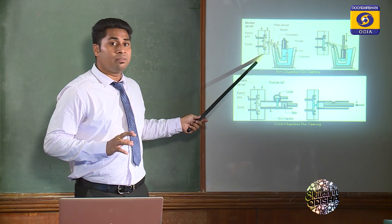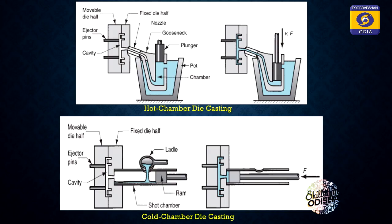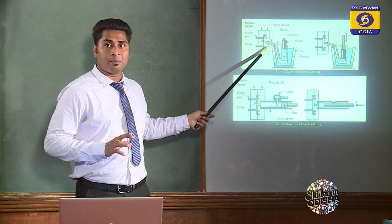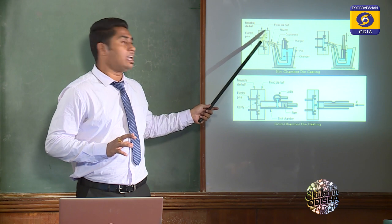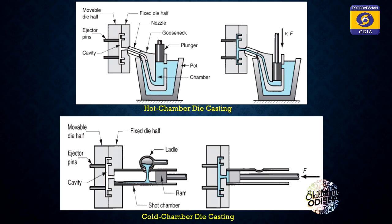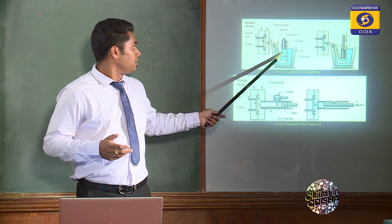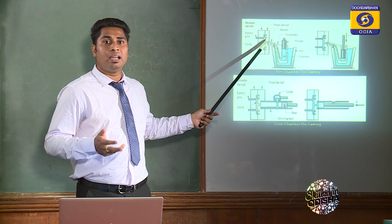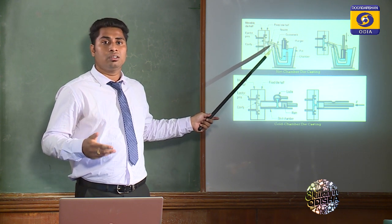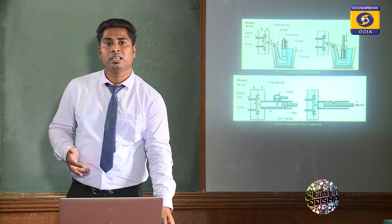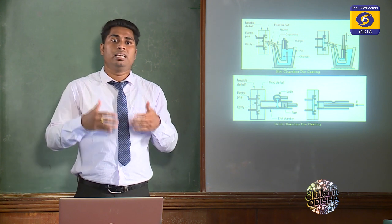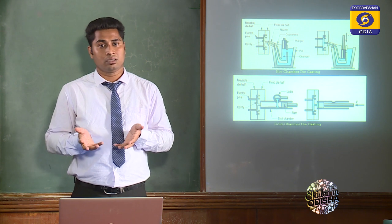The left side mold half is the movable die half and the right side is the fixed die half. Using these two die halves, the mold cavity is created and filled with molten liquid metal forced by the plunger. After filling, the casting is allowed for cooling and solidification. By removing the movable mold half, we get the required die casting product. Very high pressure is used in this process.